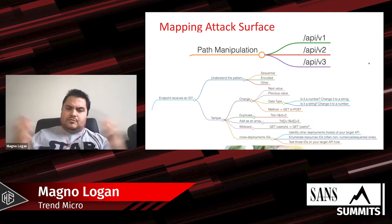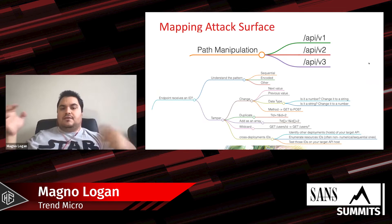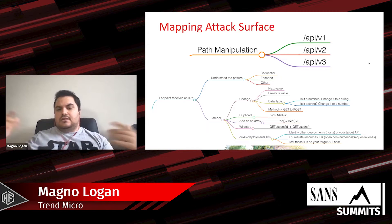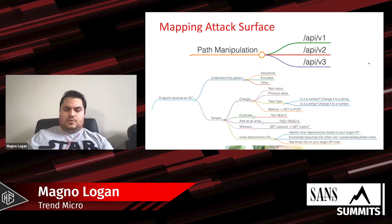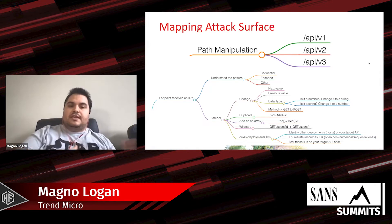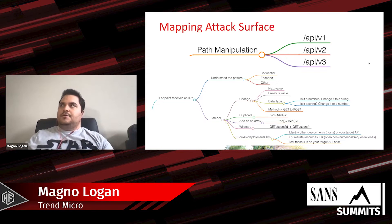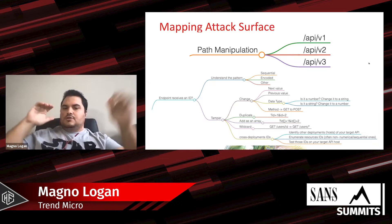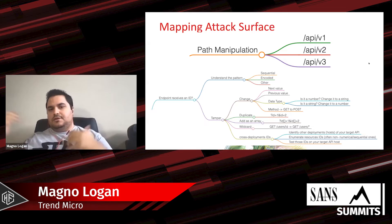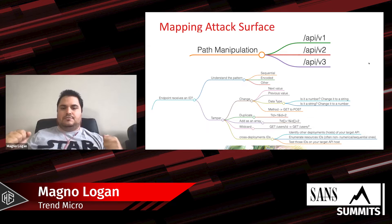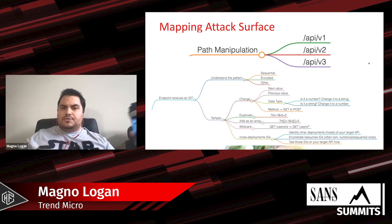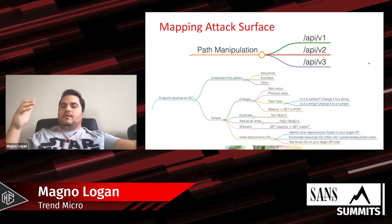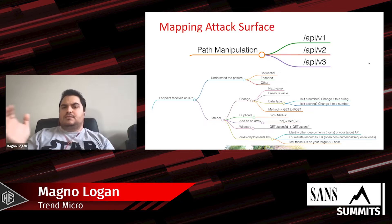How do you start when you find an API on an application? First, you need to know that APIs have versions. When new software is released, you create new versions of that API, and previous versions can have less security than newer ones. How about doing some path manipulation — instead of using an endpoint on version three, try the same endpoint on version one and see if there's less authentication or less enforcement of authorization.